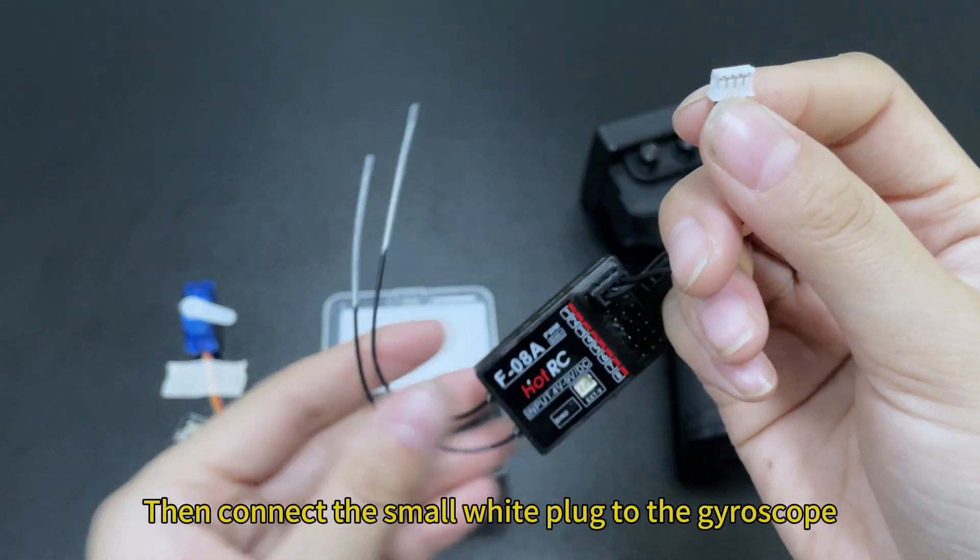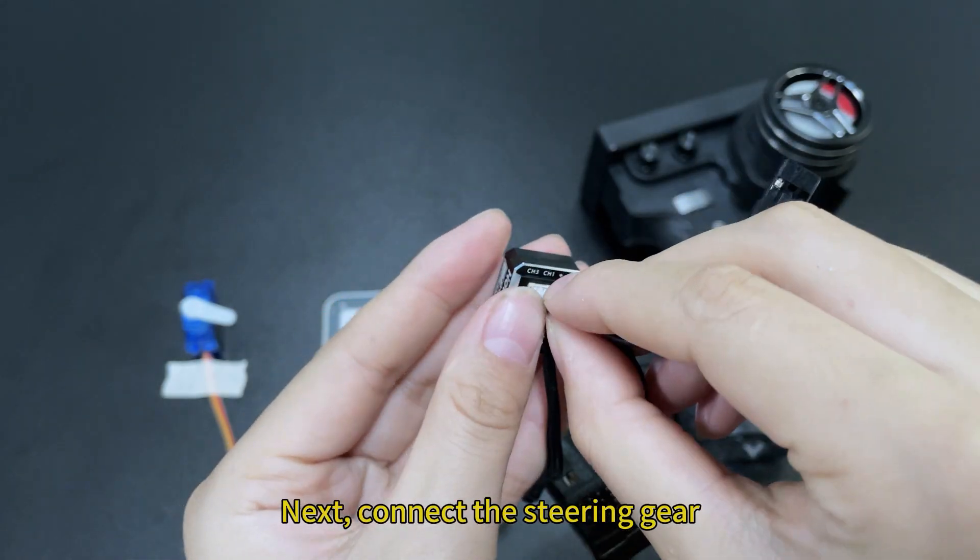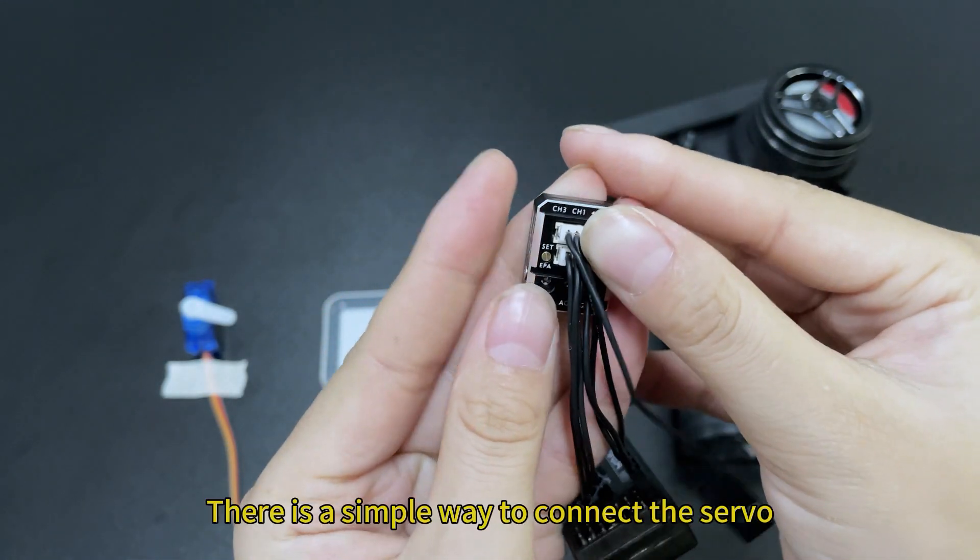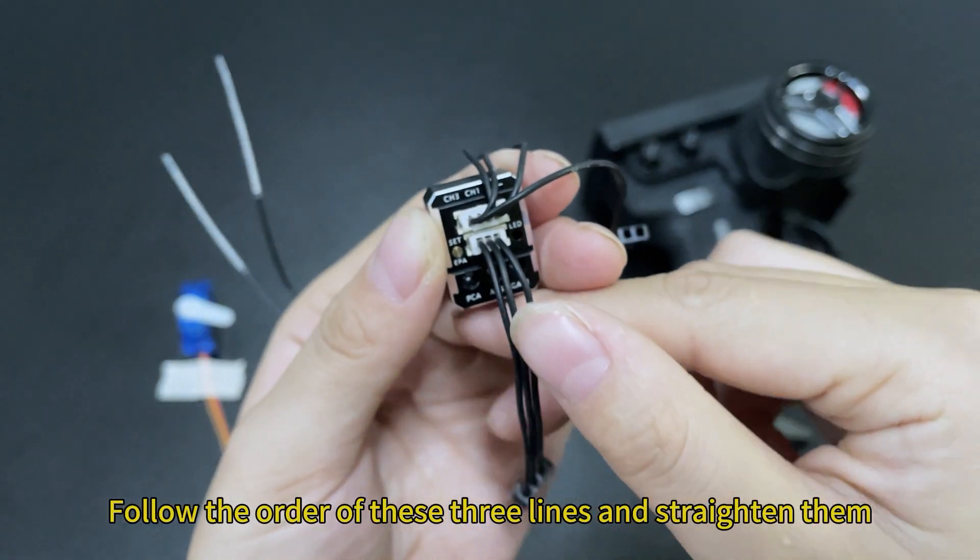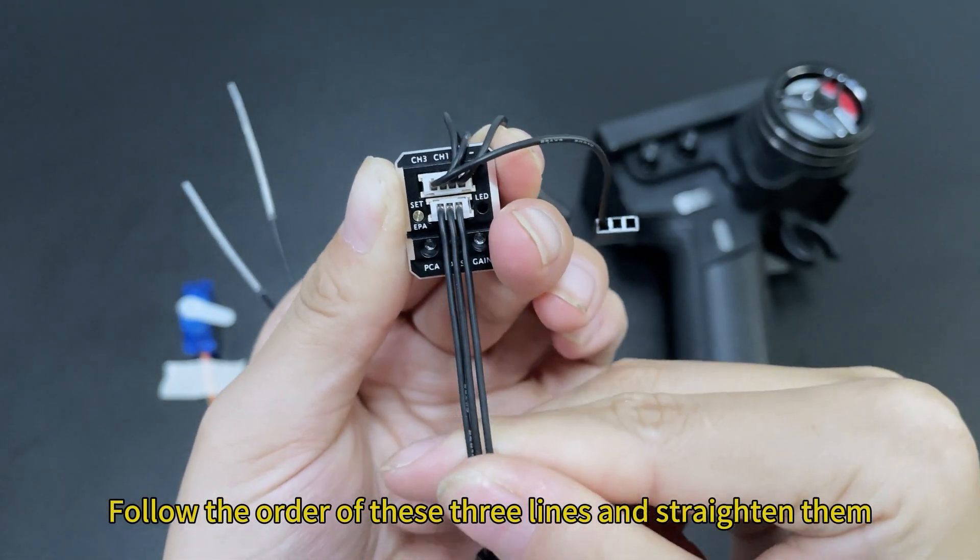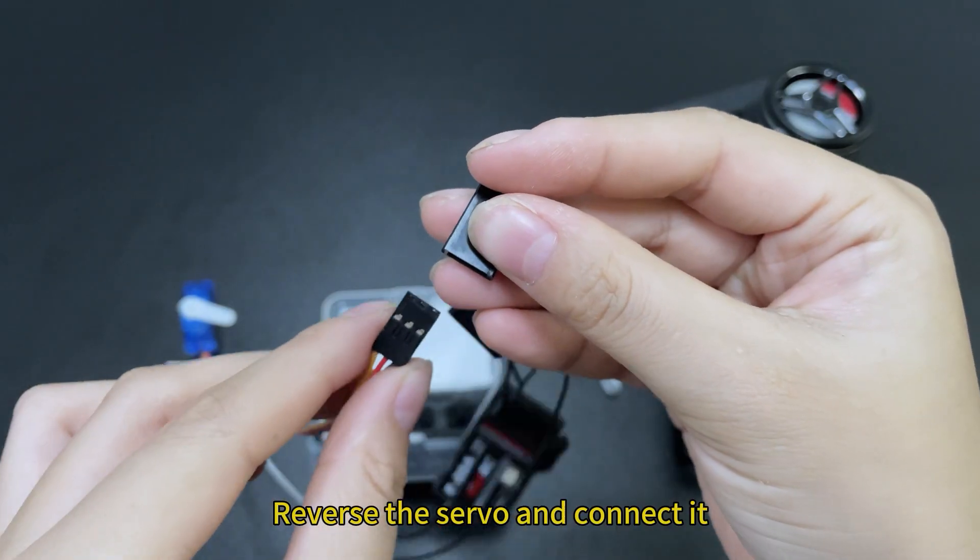Then connect the small white plug to the gyroscope. Next, connect the steering gear. There is a simple way to connect the servo. Follow the order of these three lines and straighten them. Reverse the servo and connect it.